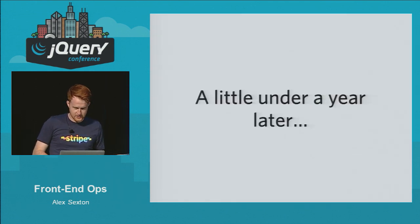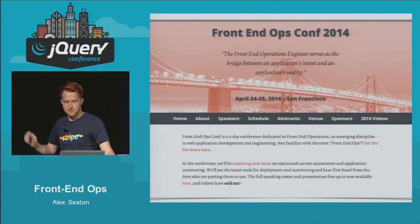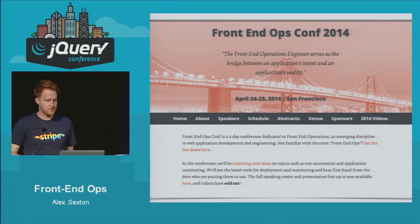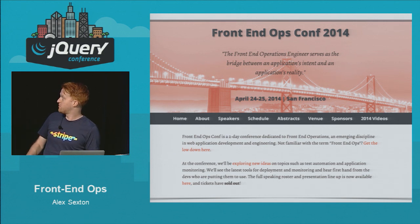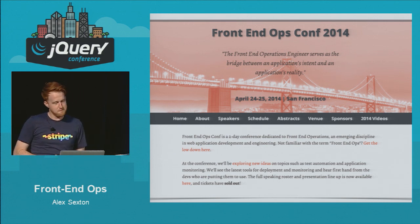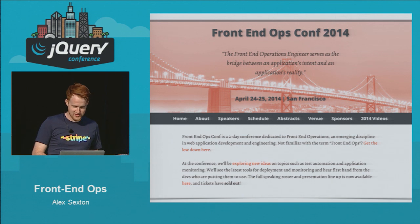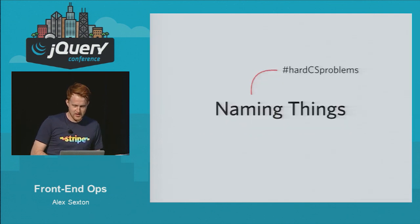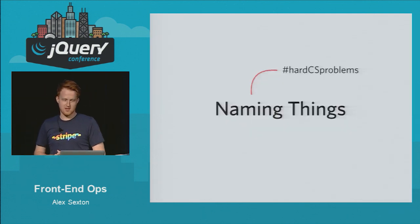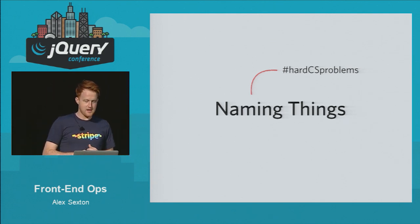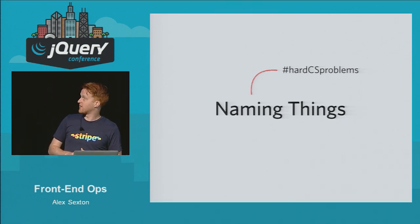Under a year later, we did Front-End Ops Conf 2014. It was fun — about 250 to 300 people showed up. My biggest contribution was mostly the name, which is pretty big. Naming things is hard; it's one of the hardest problems in computer science.